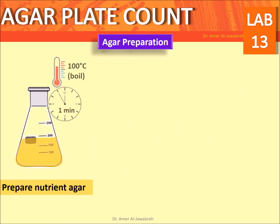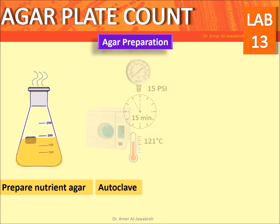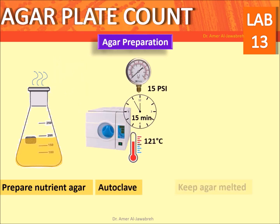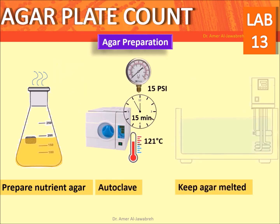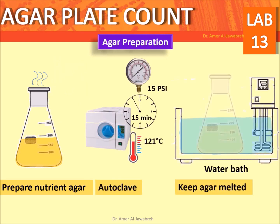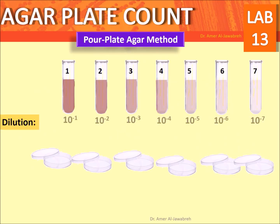Agar preparation: prepare nutrient agar by boiling for 1 minute. Autoclave, then keep agar melted at 45 degrees centigrade. Pour plate agar method.